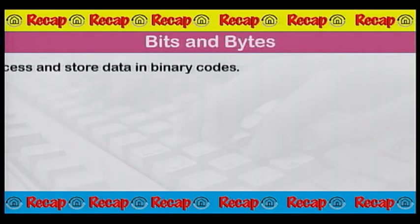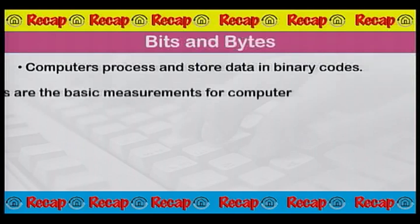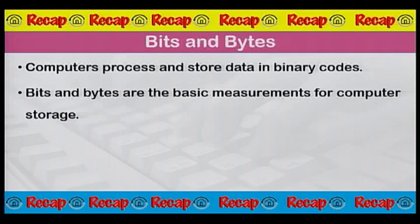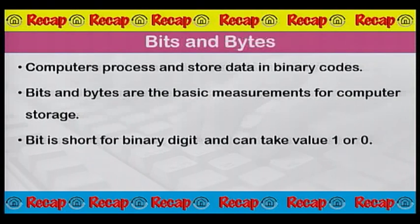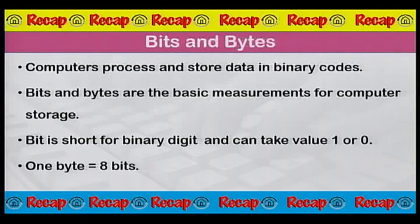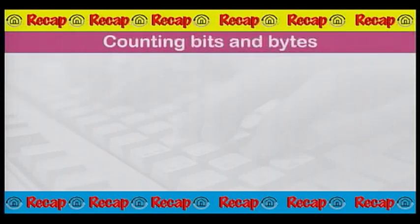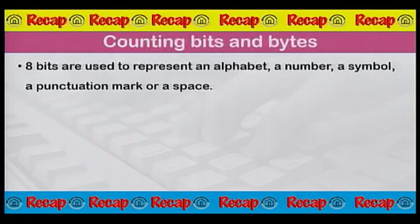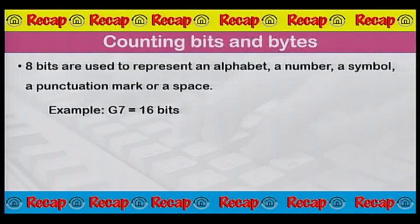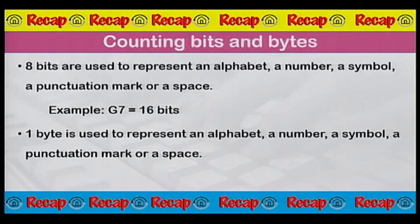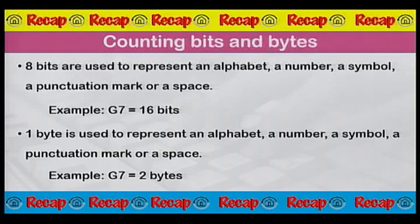Now it is time for a quick recap of today's lesson. Computers process and store data in binary codes. Bits and bytes are the basic measurements for computer storage. Bit is short for binary digit and can take the value 1 or 0. One byte is equal to 8 bits. Eight bits are used to represent an alphabet, a number, a symbol, a punctuation mark, or a space. For example, G7 consists of 16 bits and two bytes.